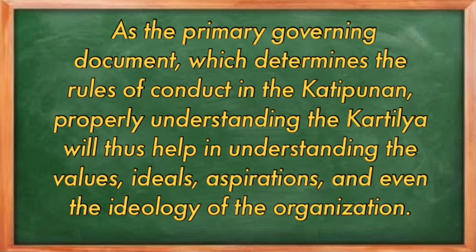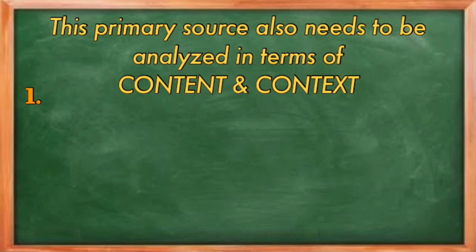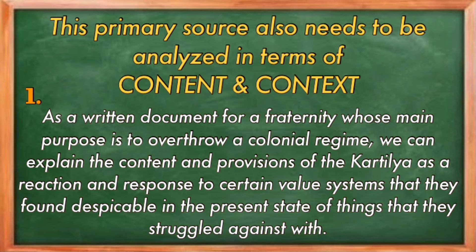As the primary governing document which determines the rules of conduct in the Katipunan, properly understanding the Kartilya will help in understanding the values, ideals, aspirations, and even the ideology of the organization. This primary source also needs to be analyzed in terms of content and context. As a written document for a fraternity whose main purpose was to overthrow a colonial regime, we can explain the content and provisions of the Kartilya as a reaction and response to a certain value system that they found despicable in the present state of things that they struggled against.